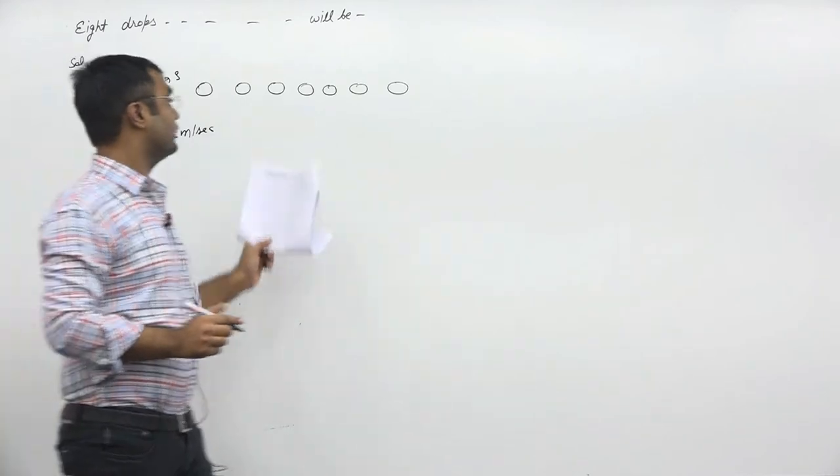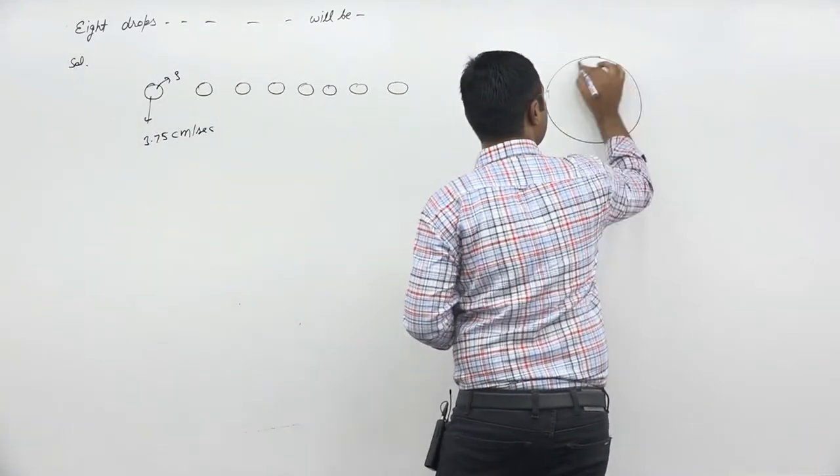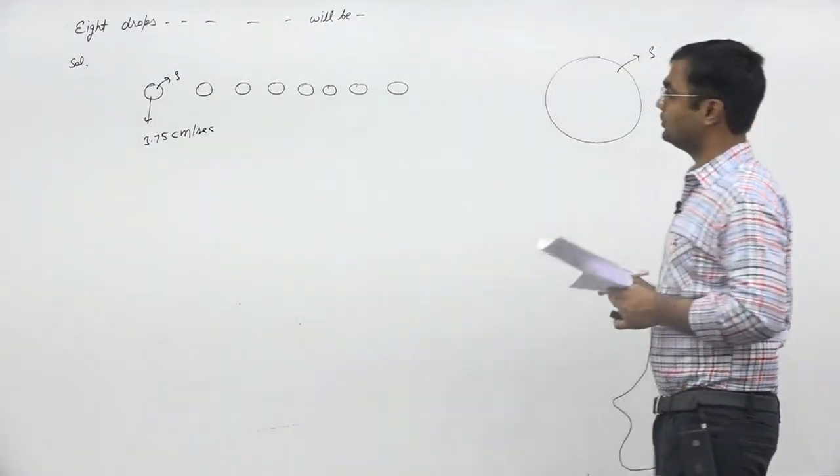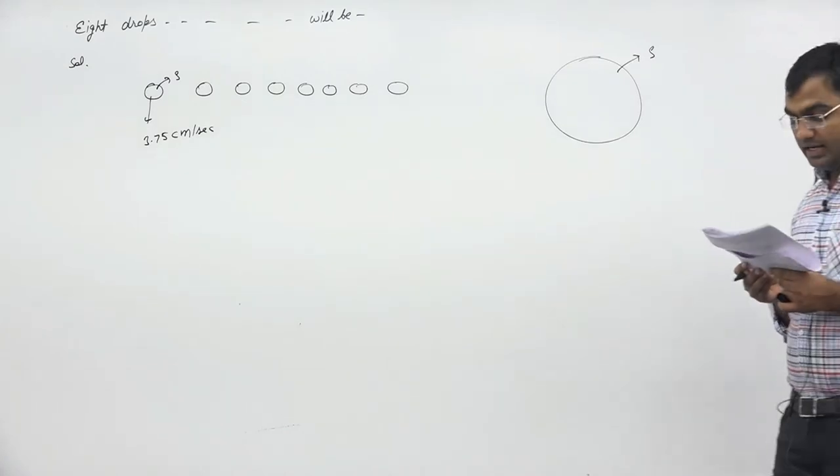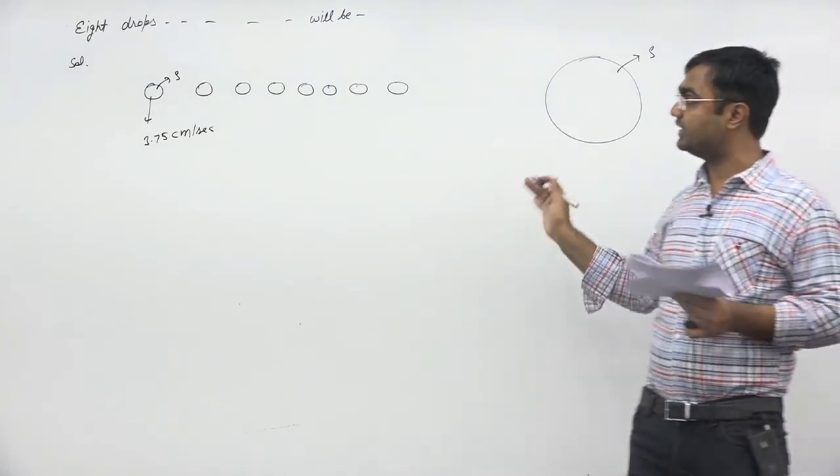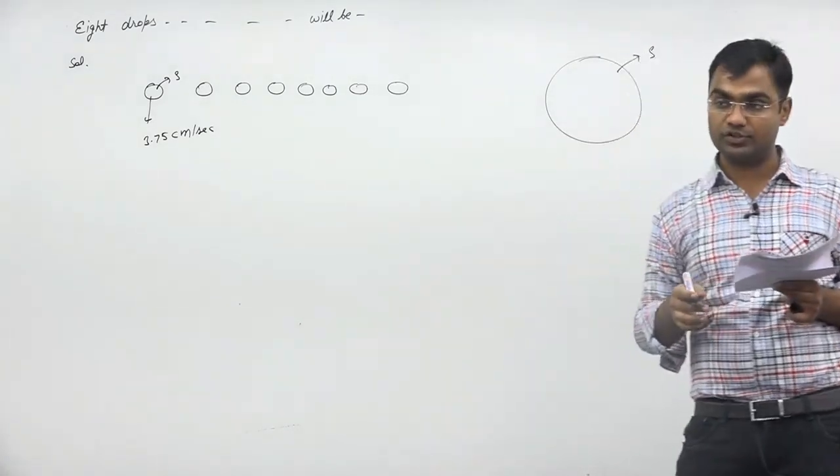When you get these 8 drops together, the density will also remain the same. Density will not change. Now if these 8 drops coalesce, what will be the terminal velocity of this big drop? That will be asked.